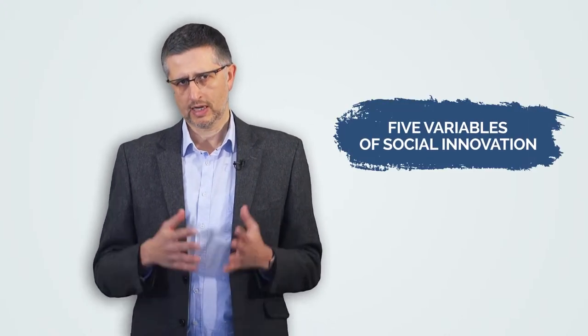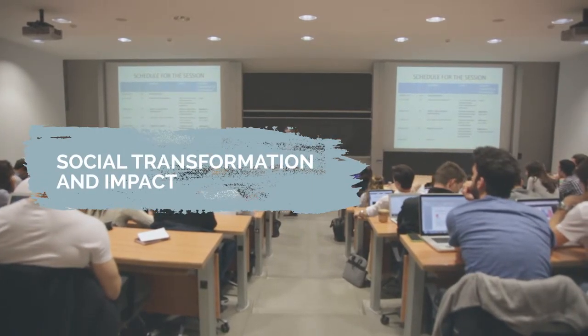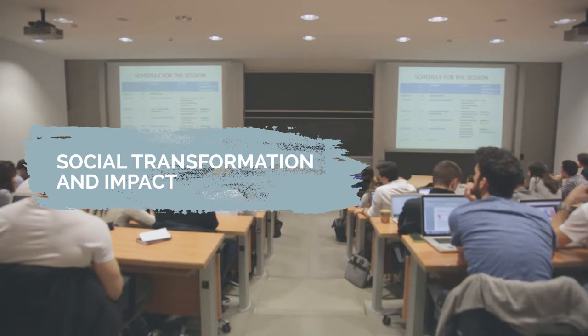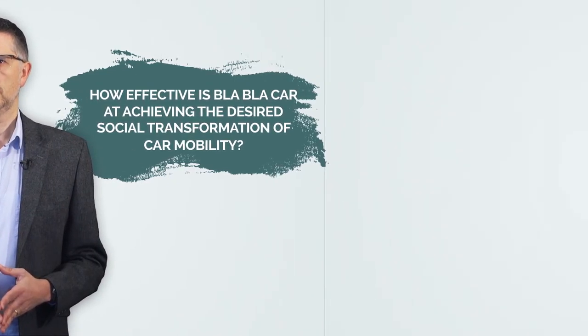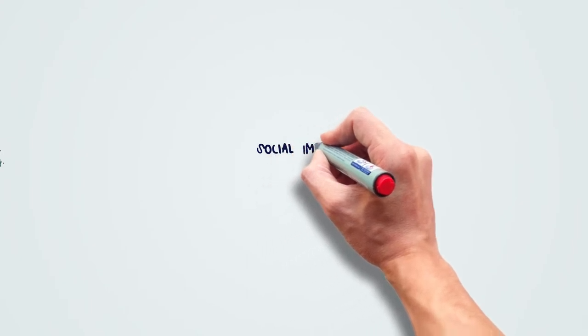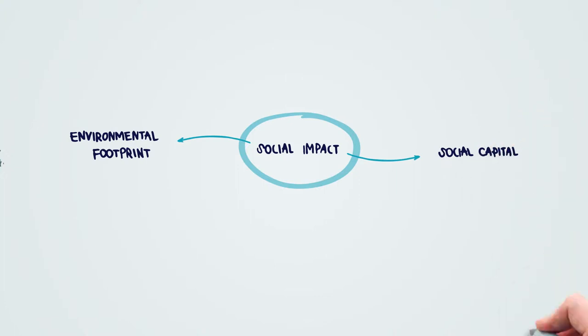As we have done with the previous case, we now turn to the five variables of social innovation for the case of BlaBlaCar. Our first variable was social transformation and social impact. The question should be: how effective is BlaBlaCar at achieving the desired social transformation of car mobility? In terms of social impact, we find two main dimensions: the environmental footprint and the social capital dimension.